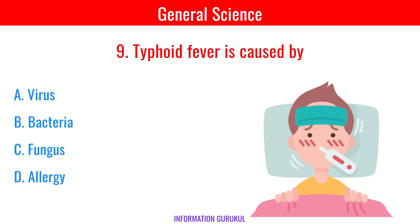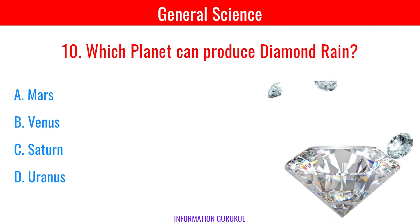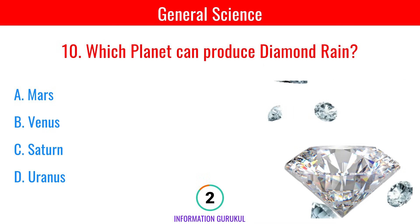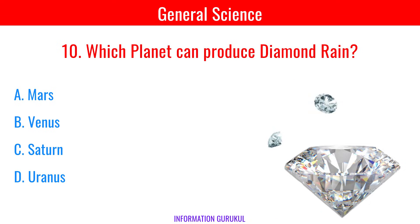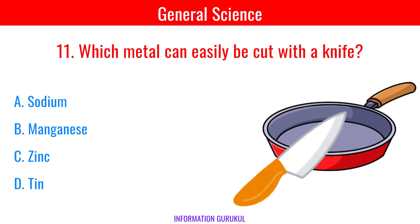Typhoid fever is caused by Bacteria. Which planet can produce diamond rain? Uranus. Which metal can easily be cut with a knife? Sodium.